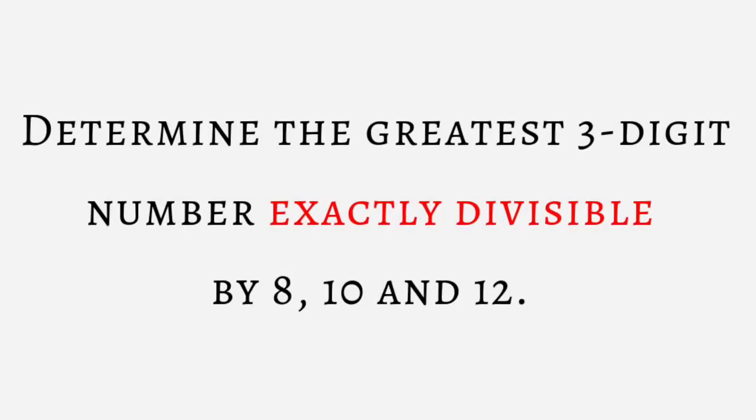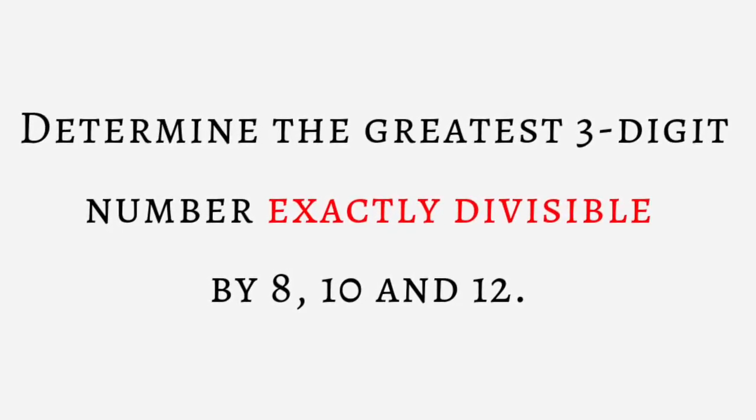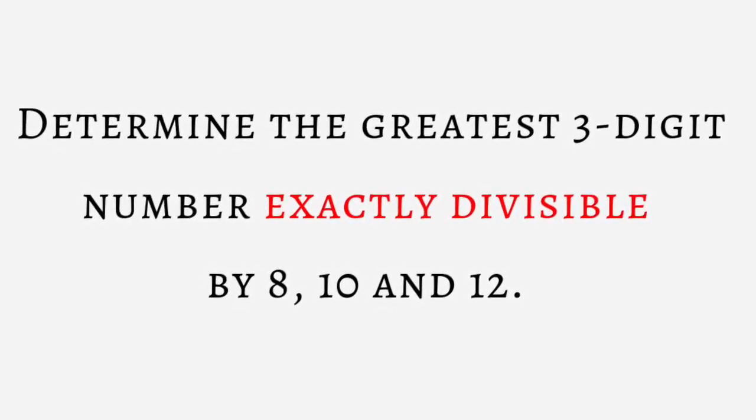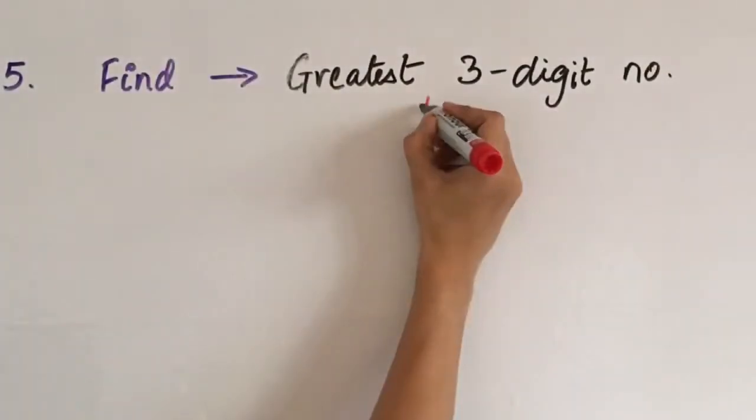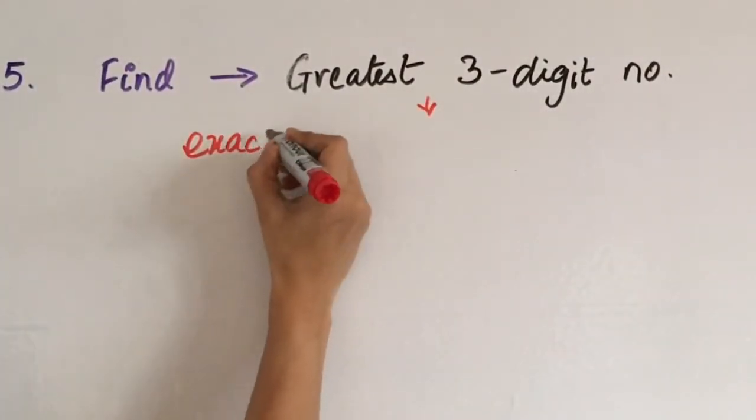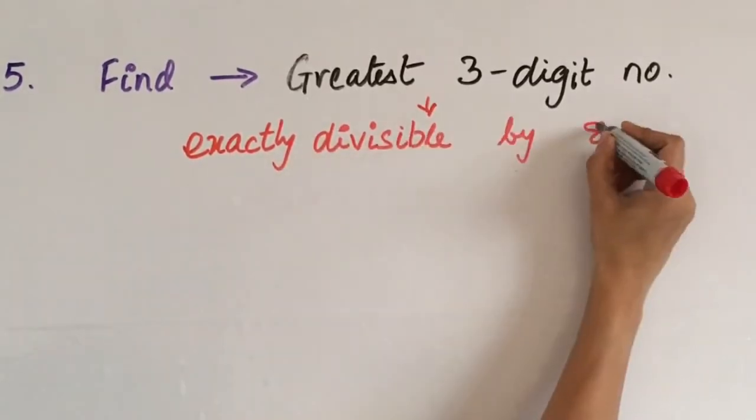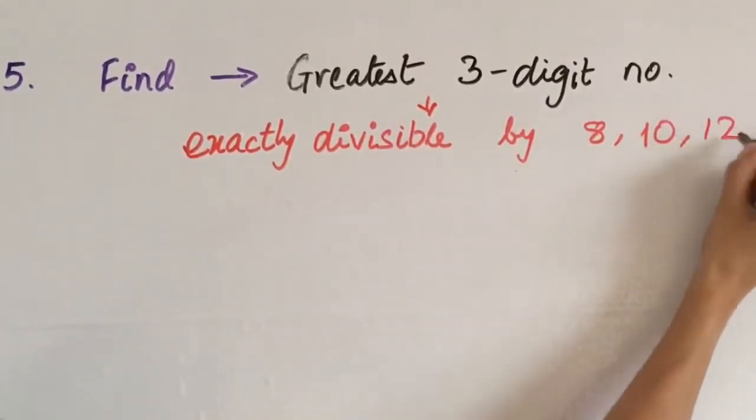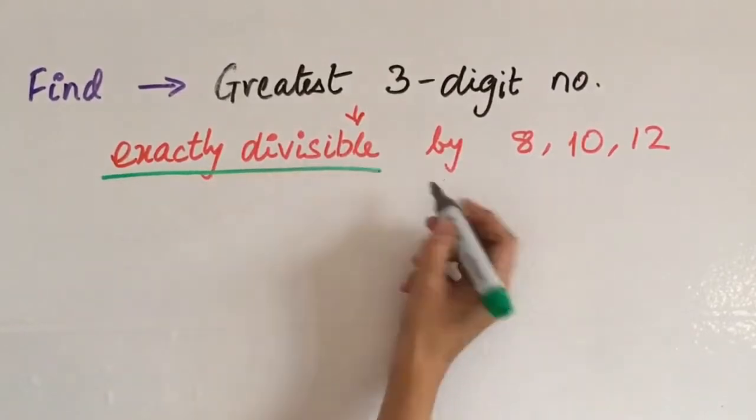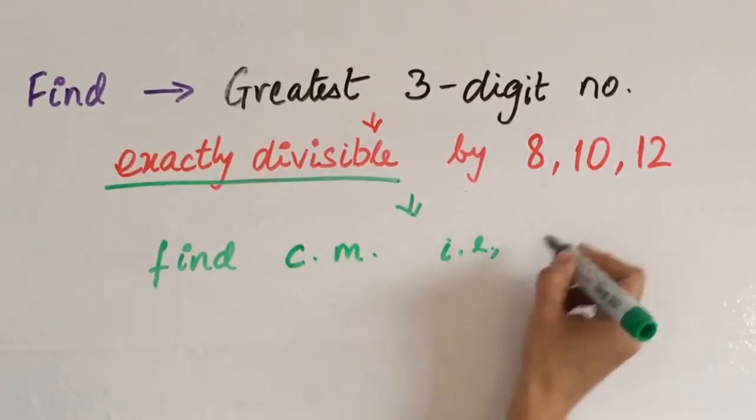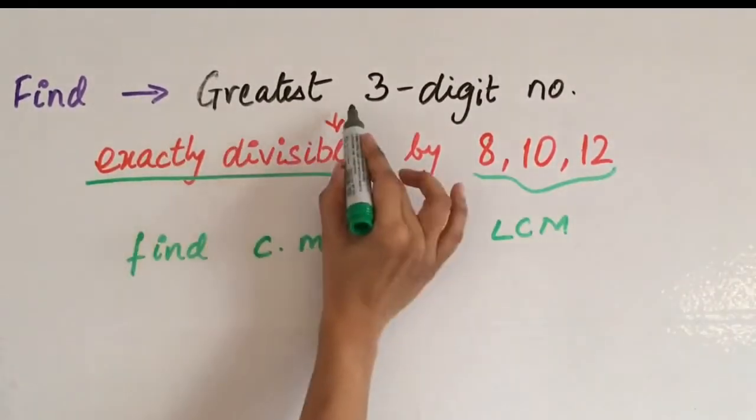Next question. Determine the greatest 3-digit number which is exactly divisible by 8, 10 and 12. This is like the previous question, but here we have to find the greatest 3-digit number. Exactly divisible word means 8, 10 and 12, it is greater and it is a common multiple. That is, what you have to find is LCM here.